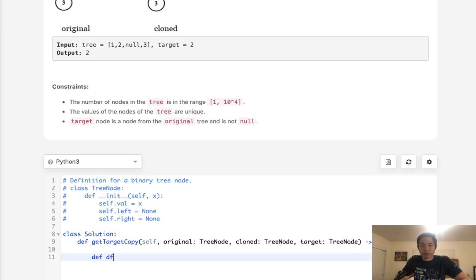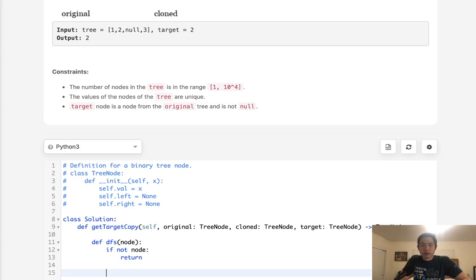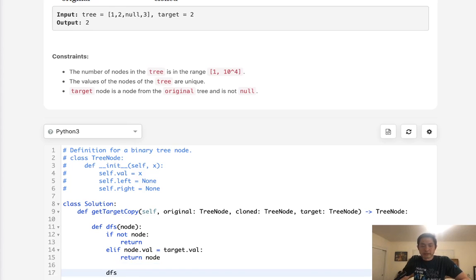This is really easy then. All we need to do is traverse through the tree however you like. Generally I like to do a depth first search. We'll pass in the node, say if not node just return.